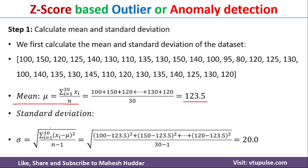Next, we calculate the standard deviation. The formula is: σ = √(Σ(xi − μ)² / (n − 1)). For the first value, xi = 100 and μ = 123.5, so we compute (100 − 123.5)². For the second value, xi = 150, giving (150 − 123.5)². The same is done for all values, with the last one being (120 − 123.5)², all divided by (30 − 1). Solving this gives a standard deviation of 20.0.